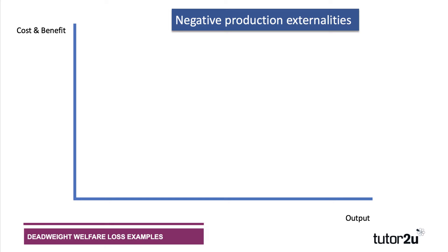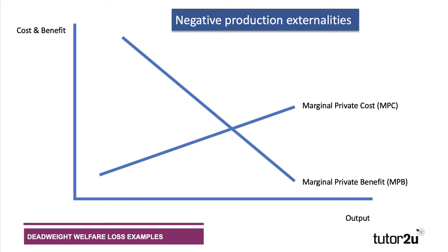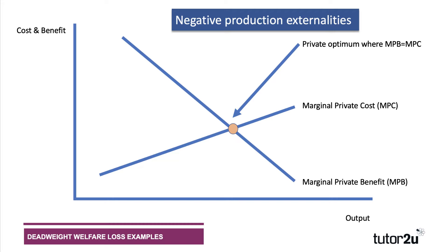Let's build up the model. We have cost and benefit on the y-axis and output quantity produced and consumed on the x-axis. Here's our marginal private benefit curve — essentially the benefit curve to the individual producer — and here's the marginal private cost, otherwise known as the internal cost curve, which is the internal cost to the producer of supplying goods and services. The market is in equilibrium at what we call the private optimum, where marginal private benefit and marginal private cost intersect.